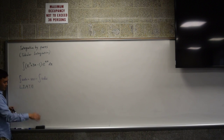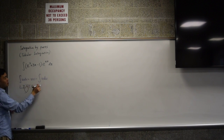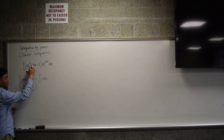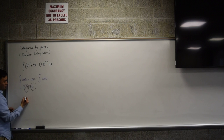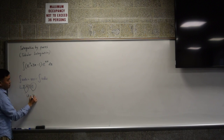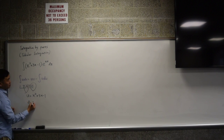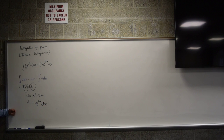So you put them here. For example, x squared plus 3x minus 1 is an algebraic function, and e to the 4x is exponential. So you're going to include the exponential into dv, and the algebraic will be U. So U is equal to x squared plus 3x minus 1, and dv will be e to the 4x dx — you have to include the dx when you write dv.